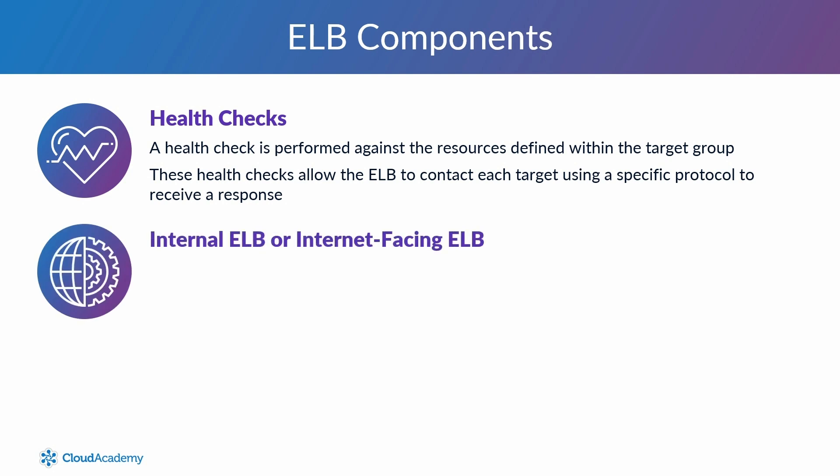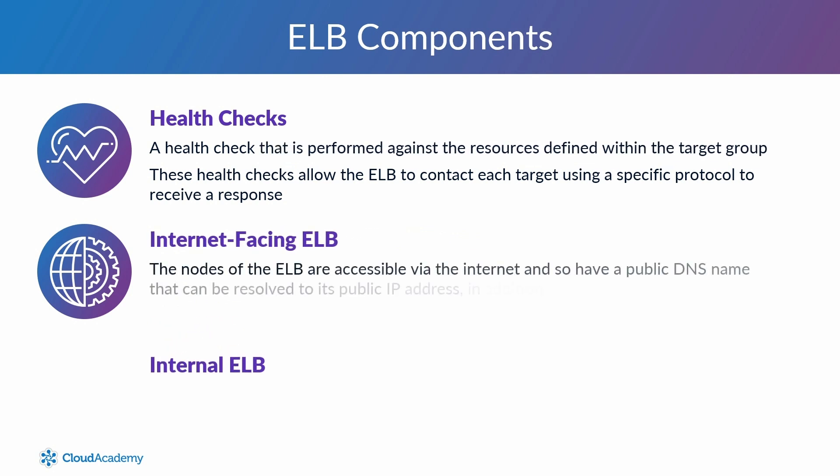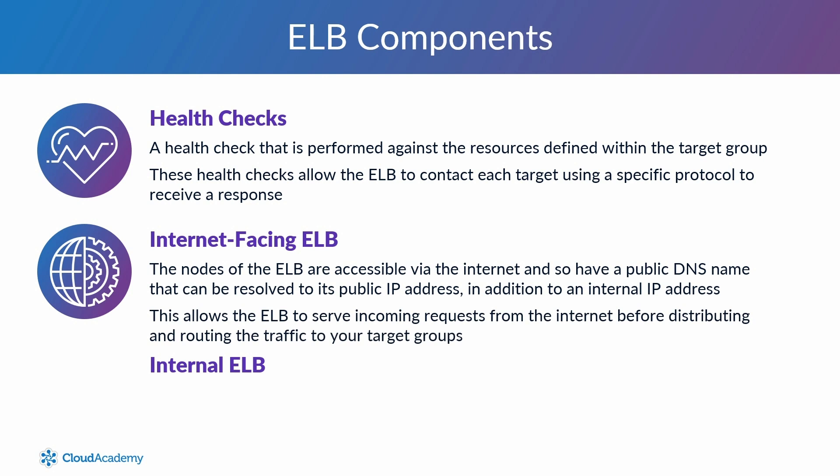There are two different schemes that can be used for your load balancers: either internal or internet facing. Internet facing — as the name implies, the nodes of the ELB are accessible via the internet and have a public DNS name that can be resolved to its public IP address, in addition to an internal IP address. This allows the ELB to serve incoming requests from the internet before distributing and routing the traffic to your target groups, which could be a fleet of web servers receiving HTTP or HTTPS requests. When your internet facing ELB communicates with its target group, it will only use the internal IP address, meaning that your target group does not need public IP addresses.